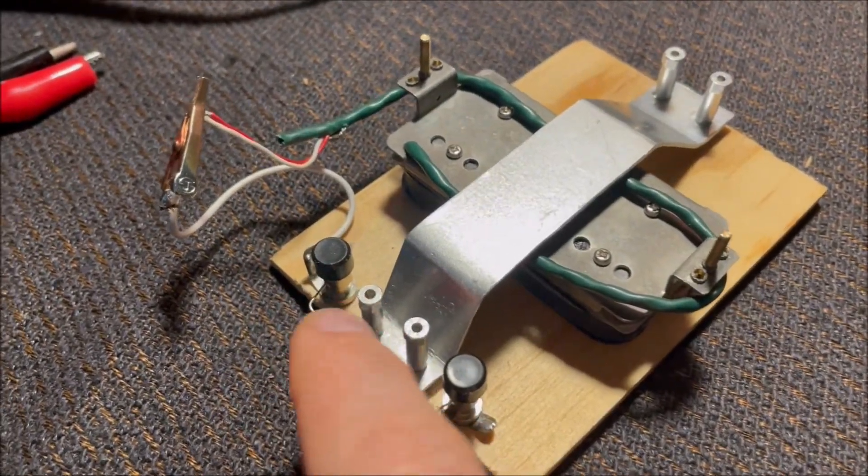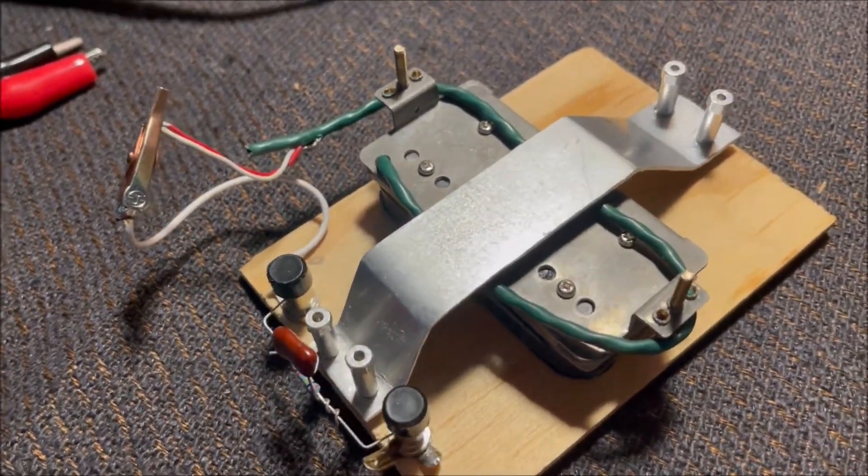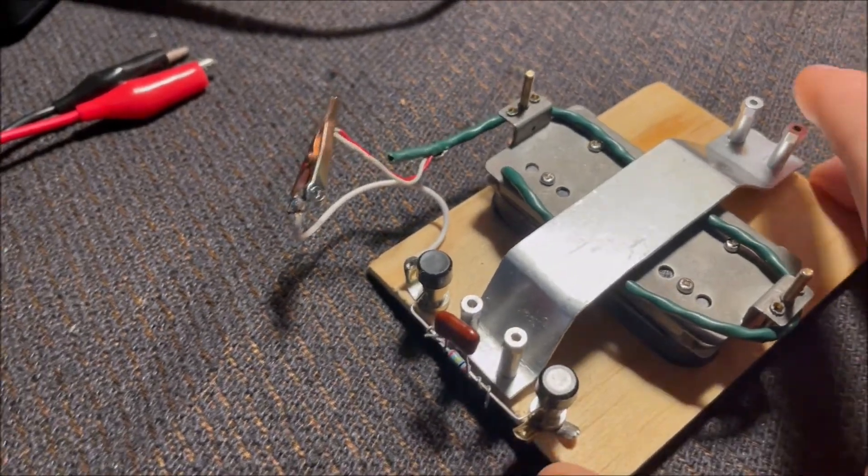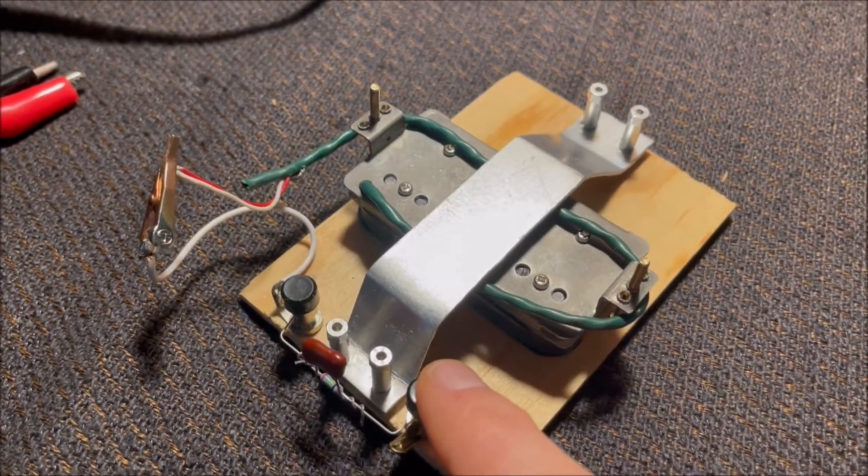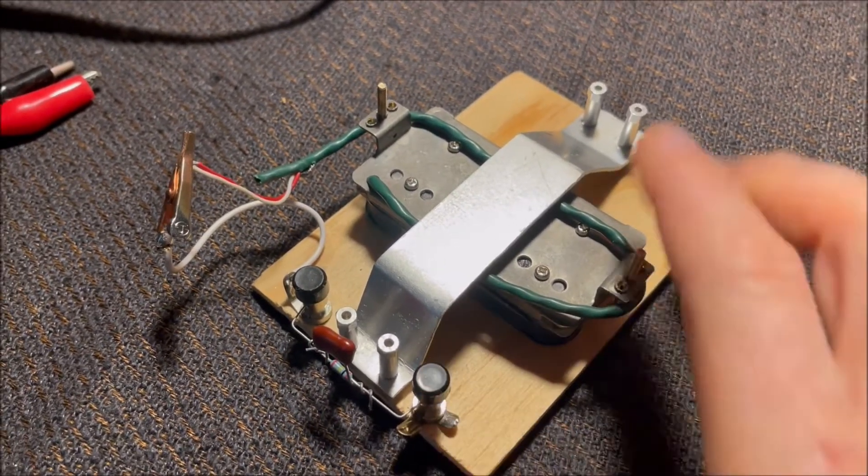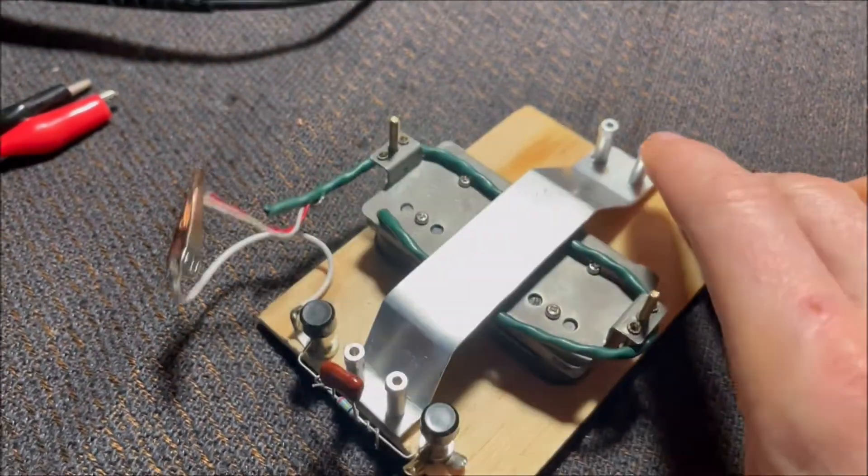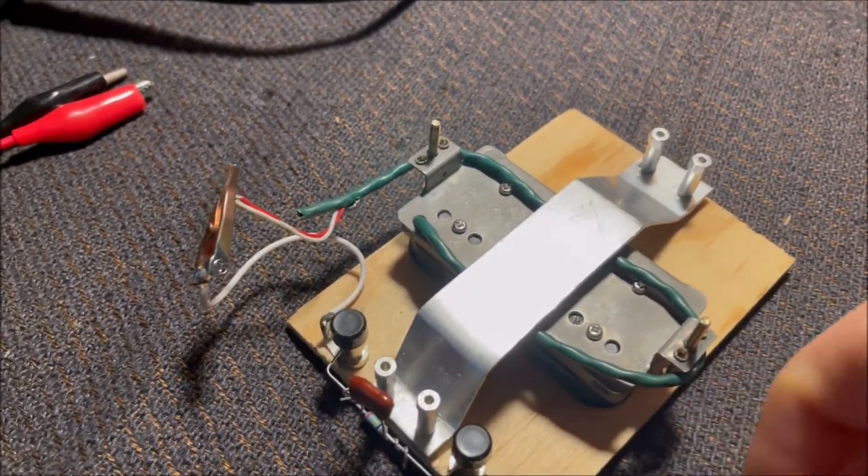I have a little jumper wire that comes off of here and I can either bypass this dummy load or put the dummy load into the circuit. This dummy load is just a 200k resistor in parallel with a 470 picofarad capacitor.